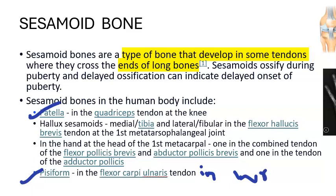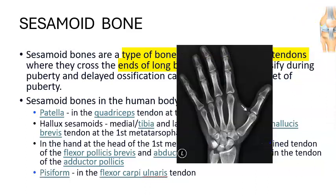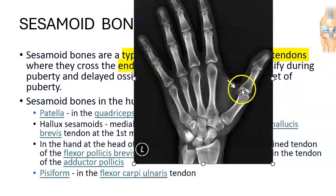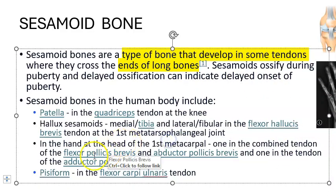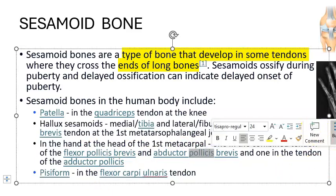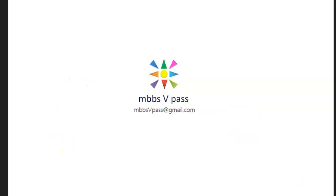If they ask for three examples, a third one is at the head of the first metacarpal — you can see a small sesamoid bone there. The muscles involved are the thumb muscles: flexor pollicis brevis and abductor pollicis brevis. Many other tendons can also have sesamoid bones.